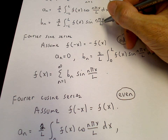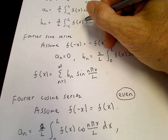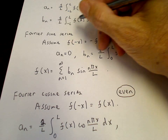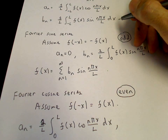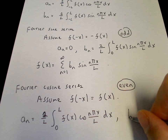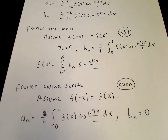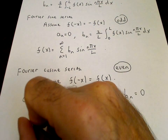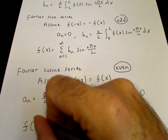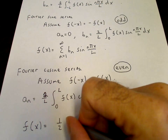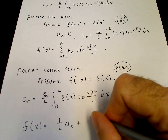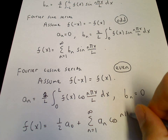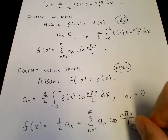And b_n is an integral of an even function times an odd function, which is an odd function. The integral over a symmetric interval of an odd function is 0, so b_n equals 0. So for the Fourier cosine series, we only have cosines: (1/2)a_0 plus the sum from n equals 1 to infinity of a_n cosine(nπx/l).